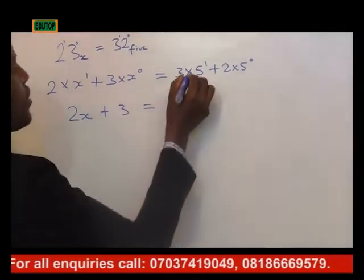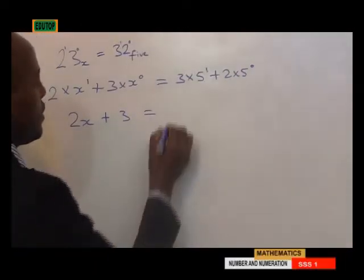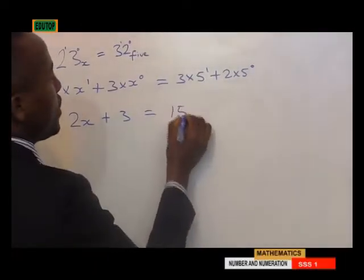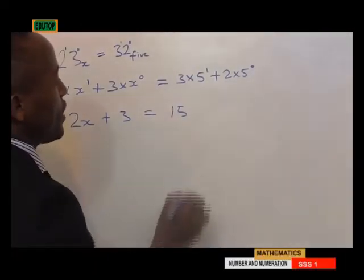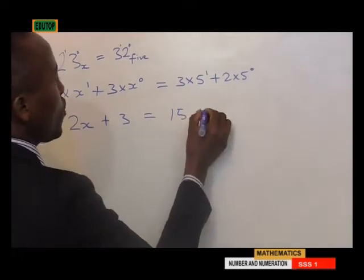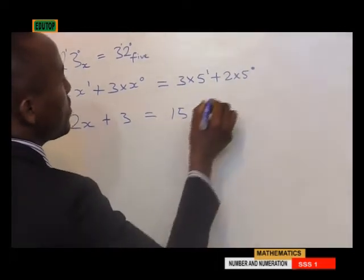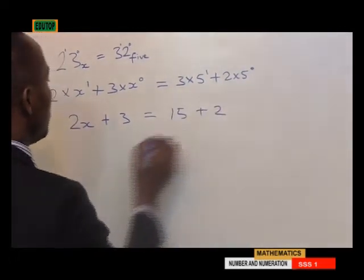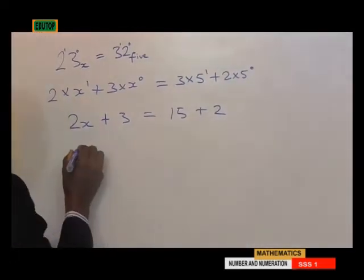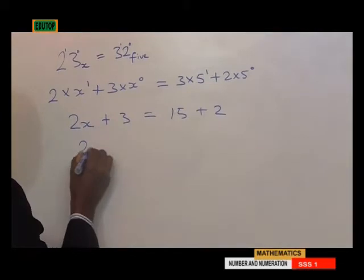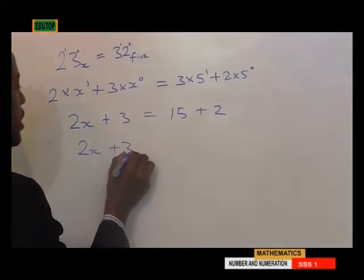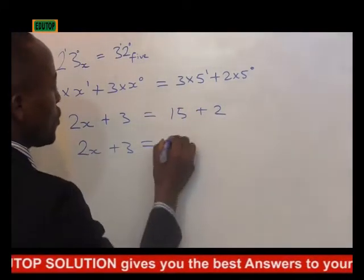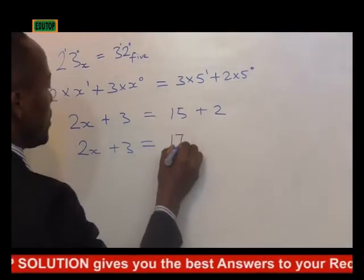3 times 5 raised to the power of 1 is 15. 5 raised to the power of 0 is 1. 2 times 1 is 2. So what we'll be having is 2x plus 3 is equal to 15 plus 2, which is 17.